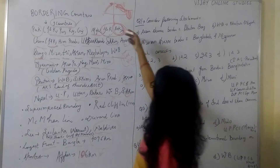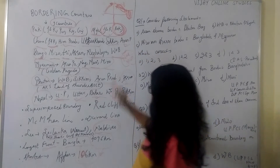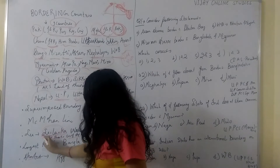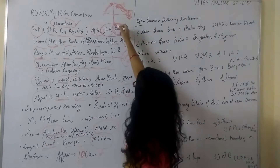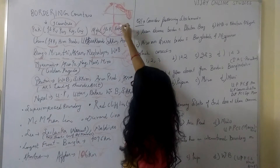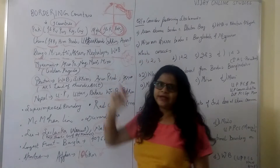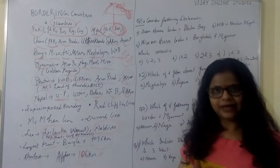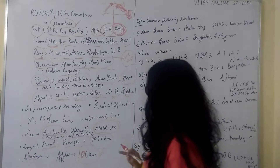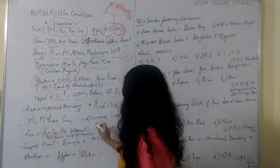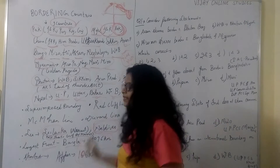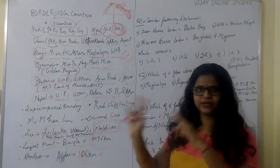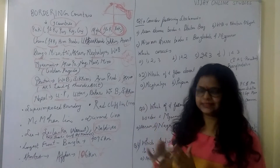Then we have neighbouring countries by sea. The nearest sea neighbour is Sri Lanka. Sri Lanka is separated from India by two sea channels — Palk Strait and Gulf of Mannar. Another neighbouring country in sea is Maldives. So we have two sea neighbours: Sri Lanka, the nearest, and Maldives.